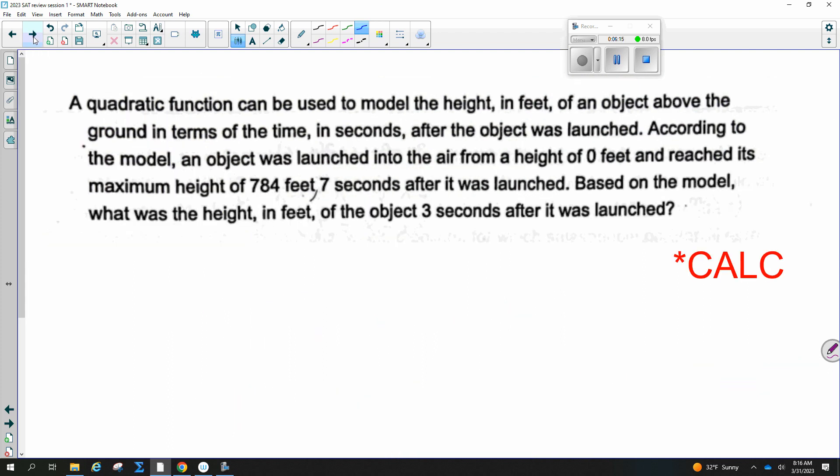A quadratic function can be used to model the height in feet of an object above the ground in terms of time in seconds after the object was launched. According to the model, an object was launched into the air from a height of zero feet and reached its maximum height of 784 feet 7 seconds after it was launched. Based on the model, what was the height in feet of the object 3 seconds after it was launched? There are a couple of ways to do this.